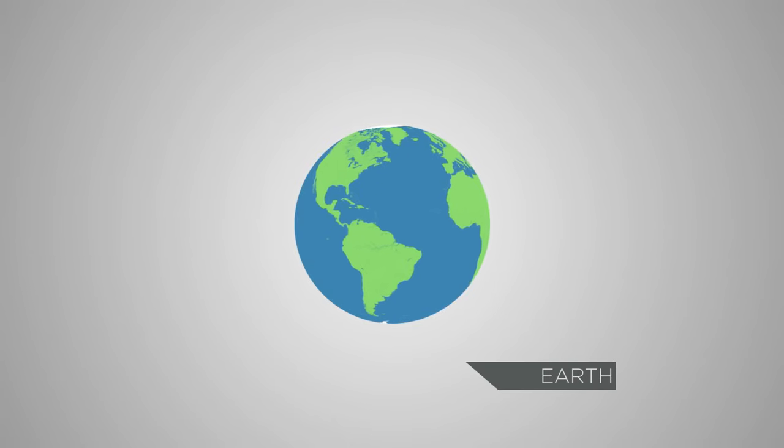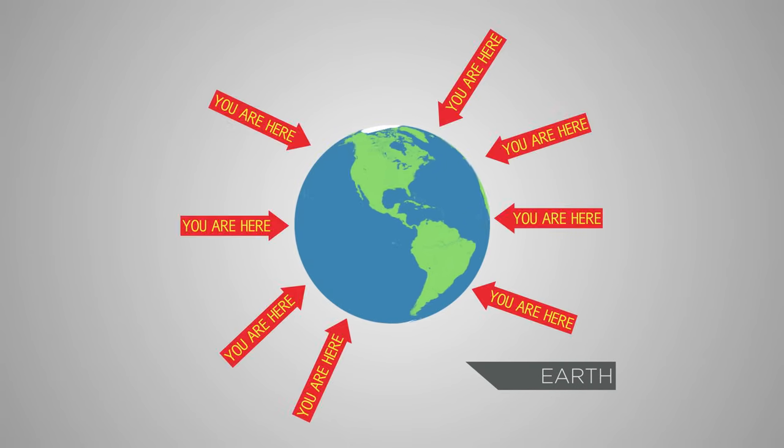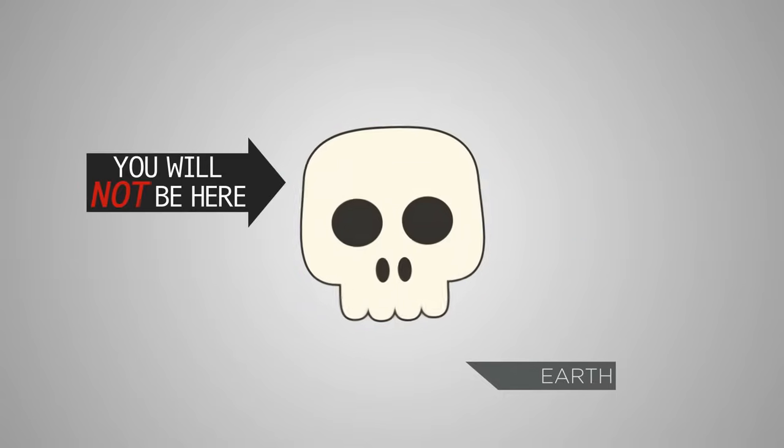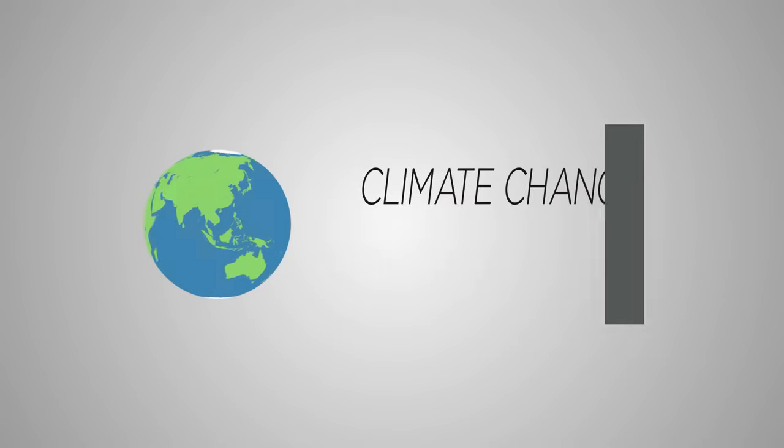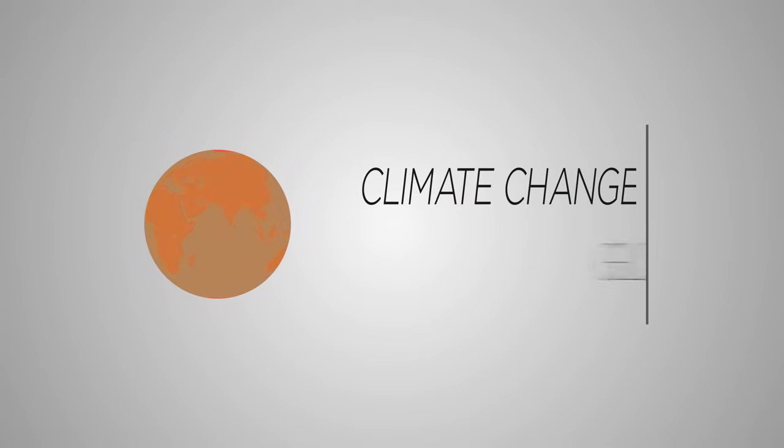This is Earth, the planet in our solar system that we live on. However, our planet is not on a good path for continuing to sustain life. The Earth is facing the accelerating detrimental effect of climate change, also referred to as global warming.